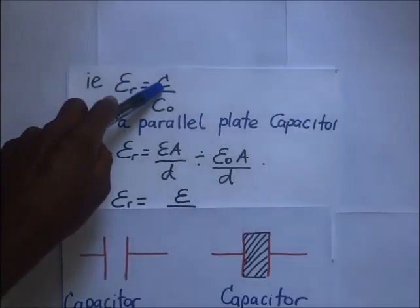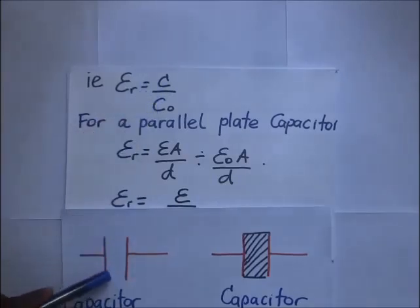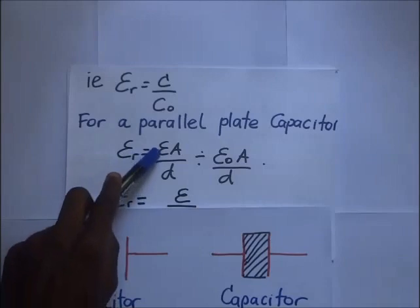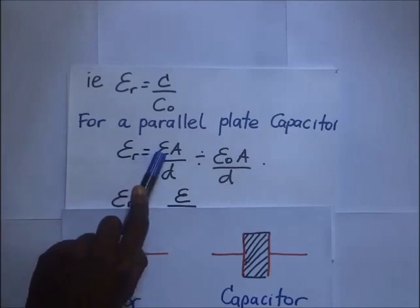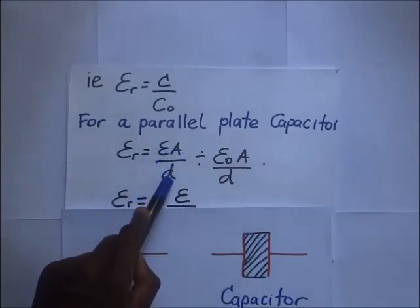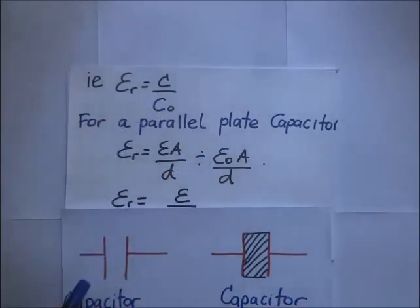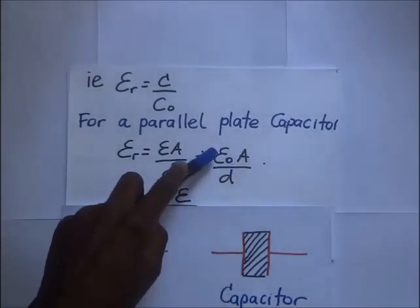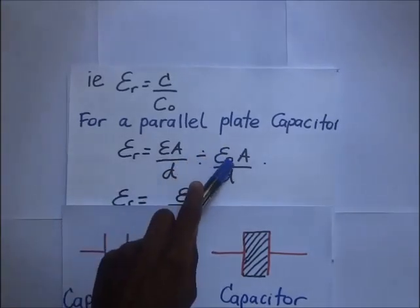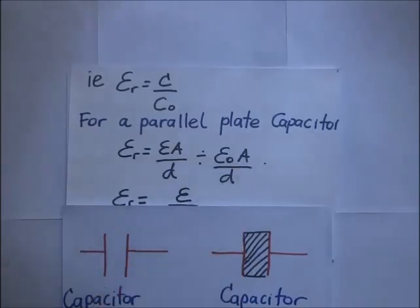The relative permittivity equals the capacitance with a dielectric divided by the capacitance without a dielectric. That gives us: the permittivity of the dielectric times the area divided by the distance, over the permittivity of free space (ε₀) times the area divided by the distance.